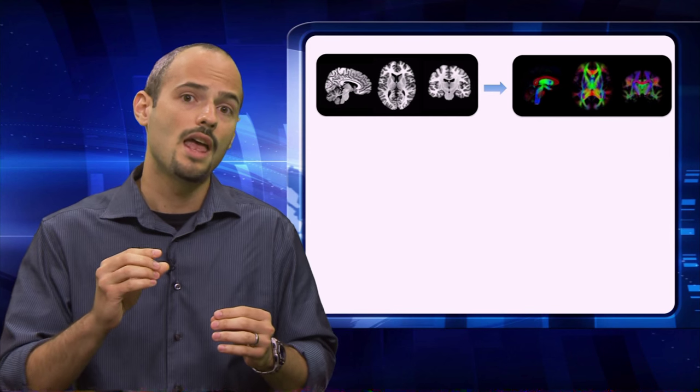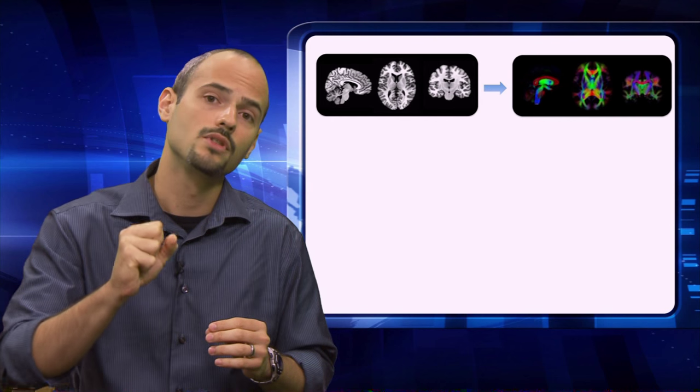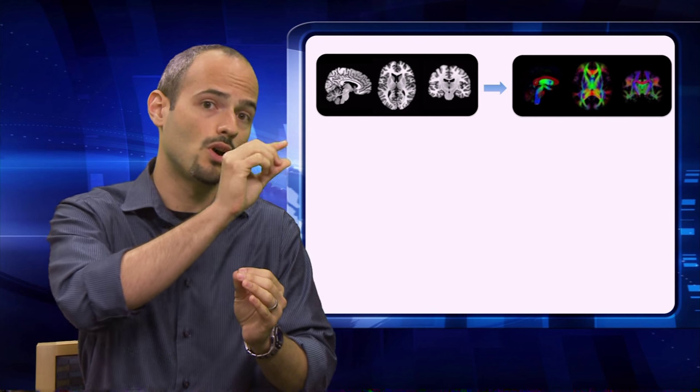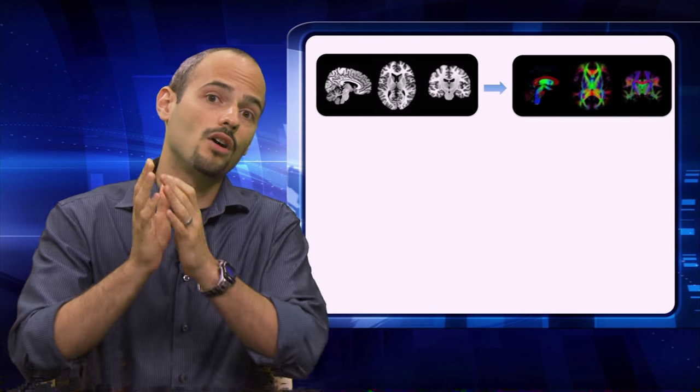So think of a brain image as different 3D cubes. And within each of these cubes, we're going to estimate the orientation, and that's the different colors in the figure, of the different connections.